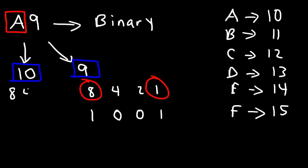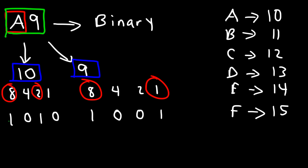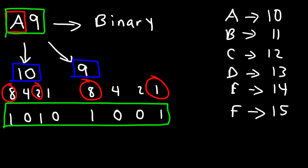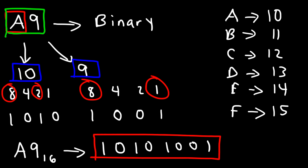Now let's use the same pattern for 10. 10 is the sum of 8 and 2, so we replace those with 1s, and use 0 for 4 and 1 since we didn't use those. So 10 is represented by the binary number 1010, and 9 is represented by 1001. A9 as a whole is equivalent to the binary number 10101001. That is the final answer — A9 in base 16 equals 10101001 in binary. You just put the two 4-bit groups together.